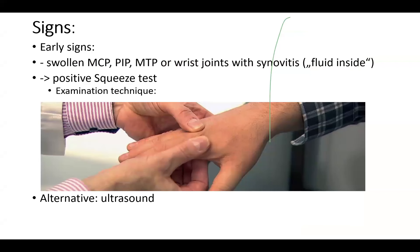How do you examine a patient like that? Early signs are swollen joints with synovitis. There is fluid inside — it's not a hard swelling, it's a soft swelling. You can find it out by the squeeze test: take the hand of the patient in your own hand, have both thumbs here, and with the index finger raise the bone up. You can feel the soft swelling. Once you've felt it once or twice, you will always recognize it. Alternatively, you can use ultrasound to see fluid in the joint.